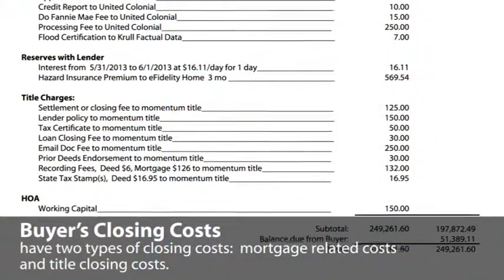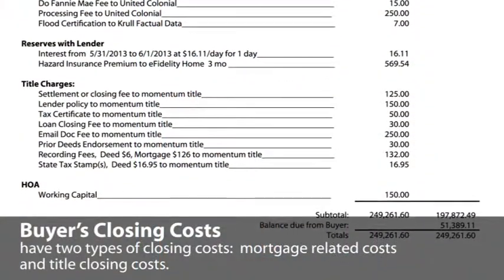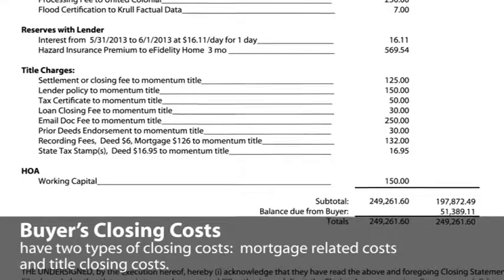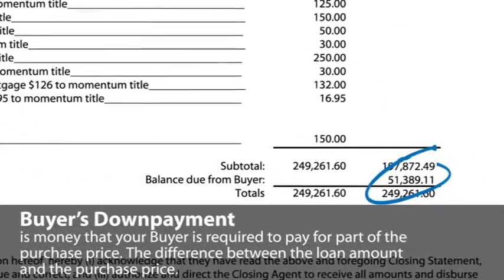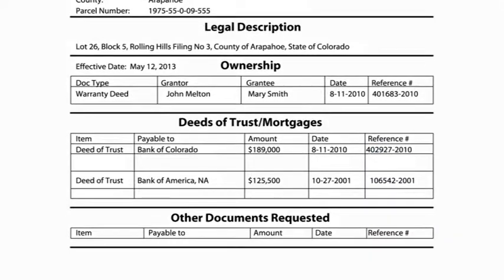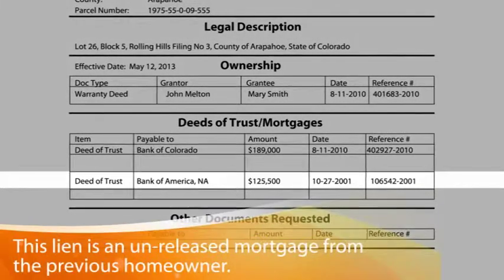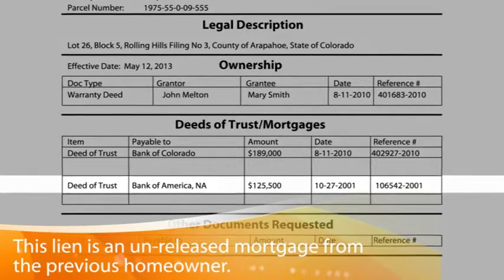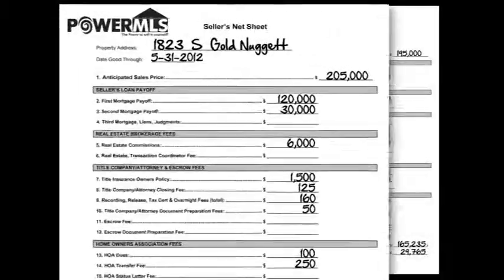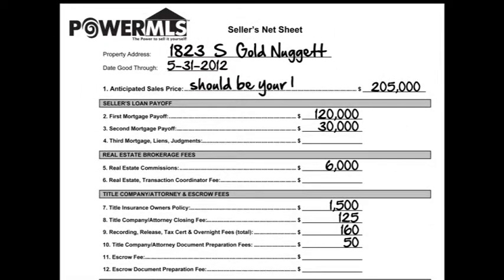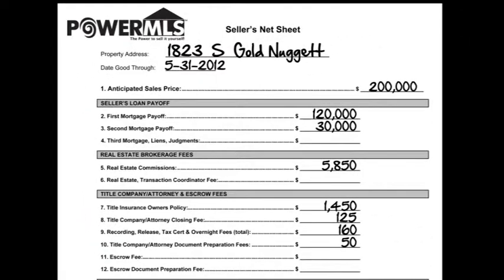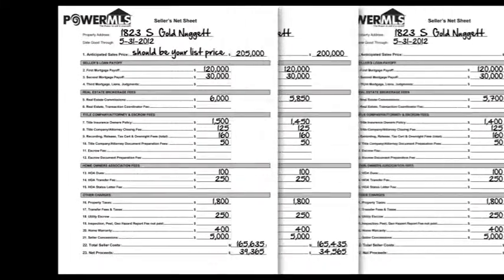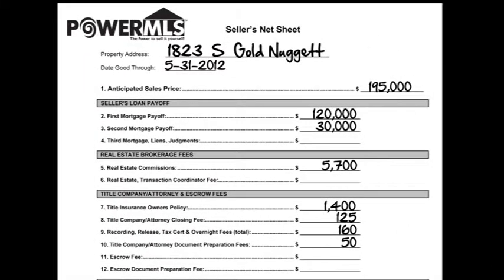In addition to how title and escrow costs affect your net proceeds, our title and escrow video teaches you essential terms and concepts. We also review the title company's role from pre-listing to closing, and point out how and when to use your title company as a resource during the sale. In our What Are My Closing Costs video, we review the various closing costs a seller can expect, and we'll fill out an actual net sheet step-by-step, going over details and addressing common questions.